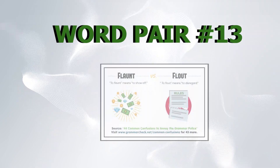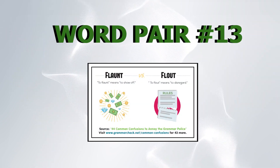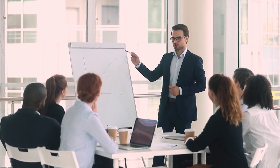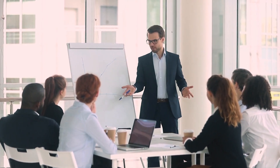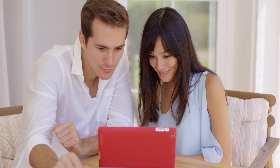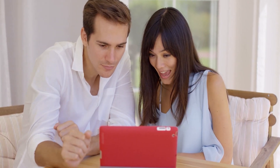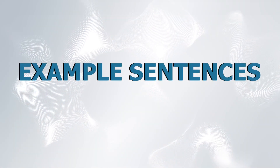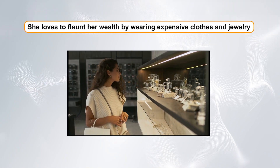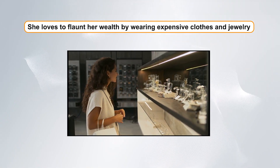Word pair number thirteen: flout versus flaunt. Our thirteenth confusing word pair is flout and flaunt. Flout means to openly disregard or mock a rule or convention, while flaunt means to display something ostentatiously or show off. Example sentences: One, he was caught flouting traffic laws and received a hefty fine. Two, she loves to flaunt her wealth by wearing expensive clothes and jewelry.